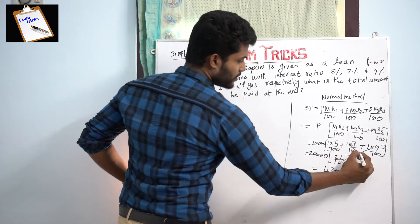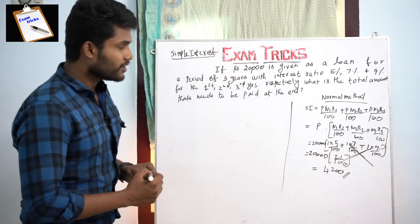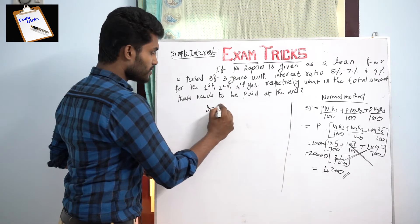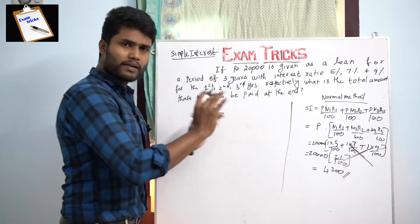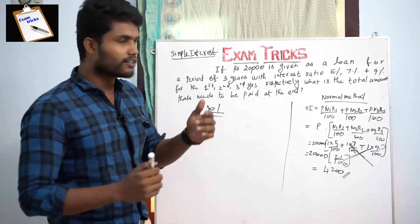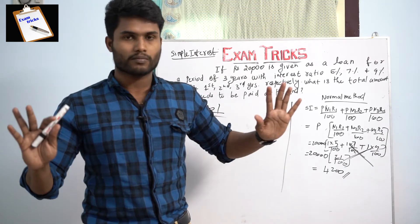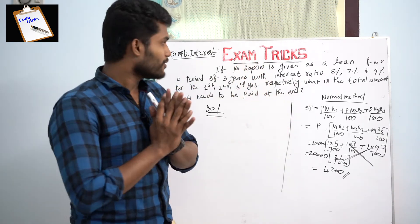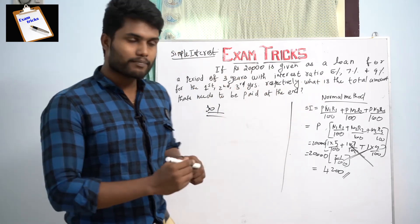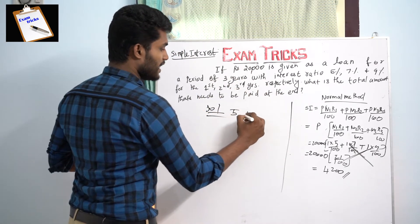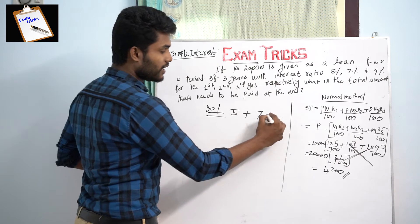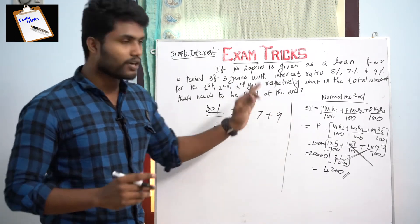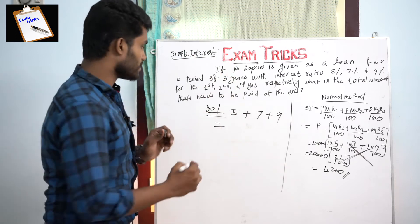I suggest that is a waste of time. How do you get a smart and easy answer? We can solve without pen and paper. If you have to solve this problem, you don't have to use pen and paper. So, how do you solve it? First year: 5 percent. Second year: 7 percent. Third year: 9 percent. I am adding 5 plus 7 is 12, and 12 plus 9 is 21 percent.